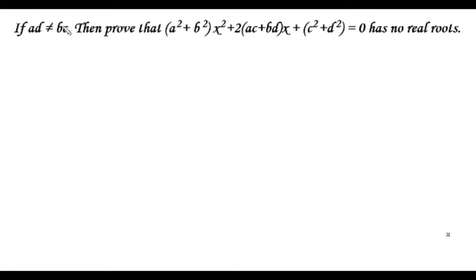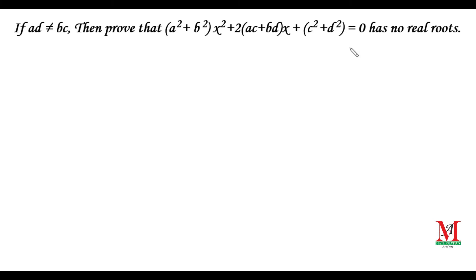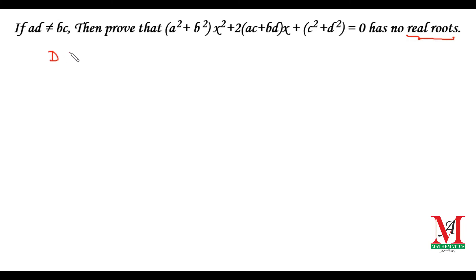Hello, good morning from the Mathematics Academy. In this question, you will see that if ad is not equal to bc, then we have to prove that this quadratic equation has no real roots. First of all, what is the meaning of no real roots? It means if the discriminant D is less than or equal to zero, meaning negative, then there are no real roots.